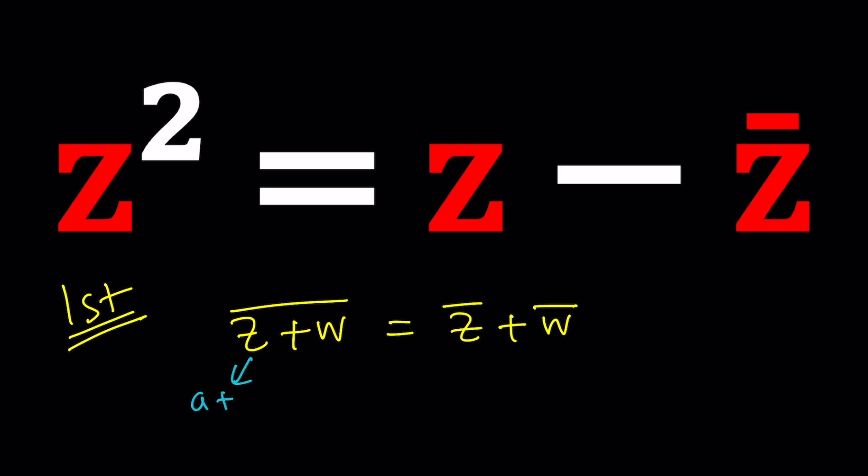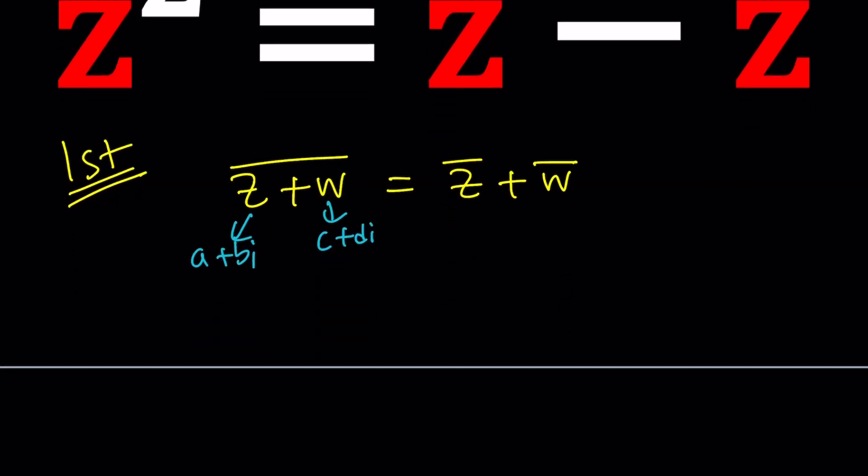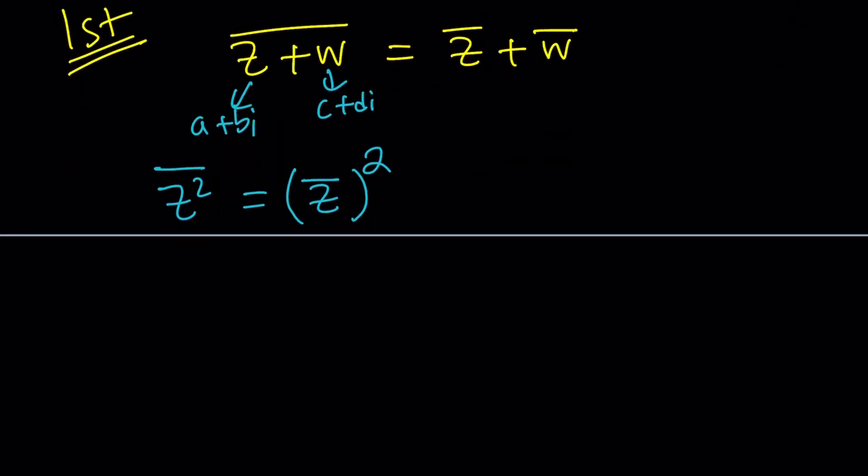In other words, you can just conjugate separately and it should give you the same thing. And you can easily prove something like this, one of the easiest proofs in math probably. You can say, hey, suppose this is a plus b i and this is c plus d i and then you should evaluate each separately and then you're going to realize they're very cool. And I think this also works for products, quotients, differences, so on and so forth. But what about squares? Well, squares is a product, right? So it should work. Let's find out.